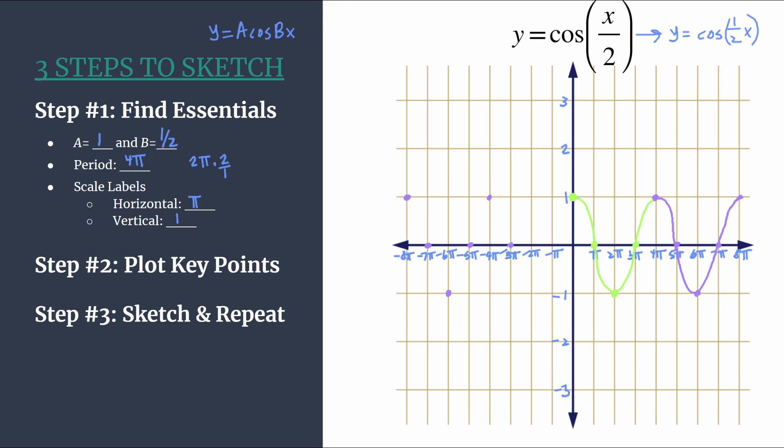Max, 0, min, 0, and we connect to our original cycle. Alright. So we've got a really nice looking graph for y equals cosine x over 2. And one final note before we finish up.